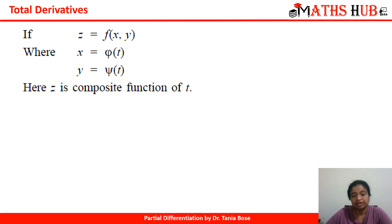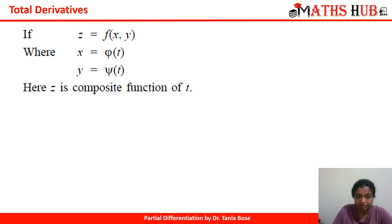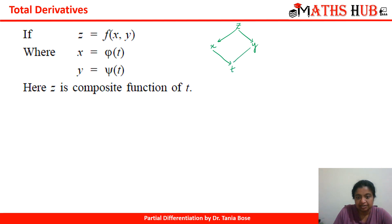Now let us relate this concept with the tree diagram I introduced in the composite part. It will become very simple. Here, z is a function of x as well as y, and further x and y are both functions of t. So immediately I can say that z is a composite function of t.